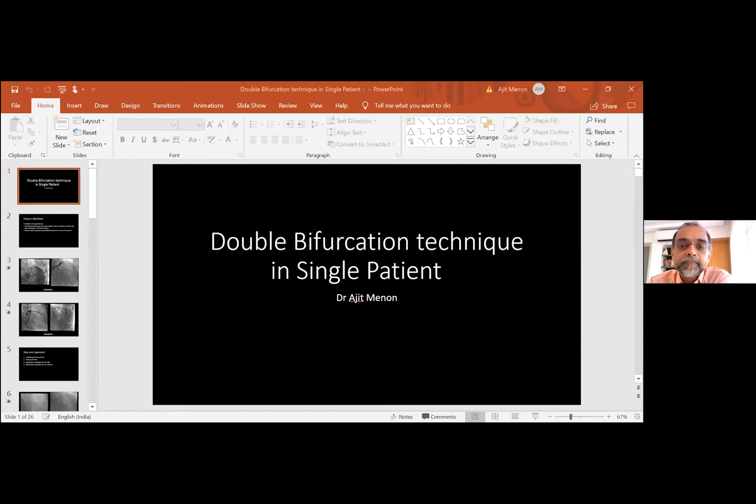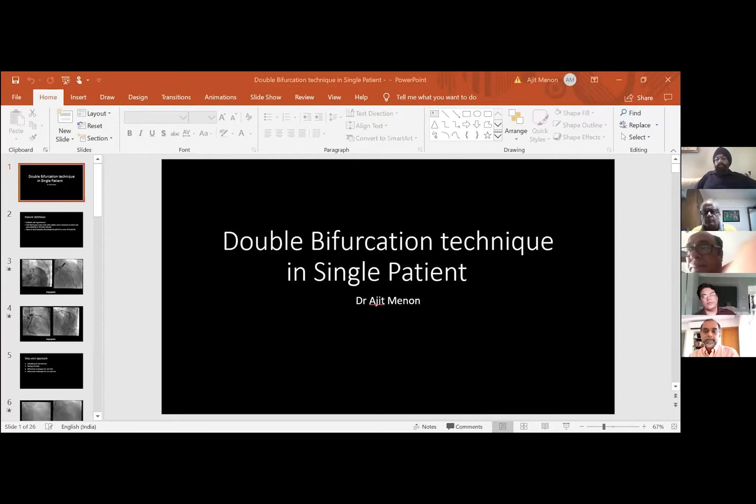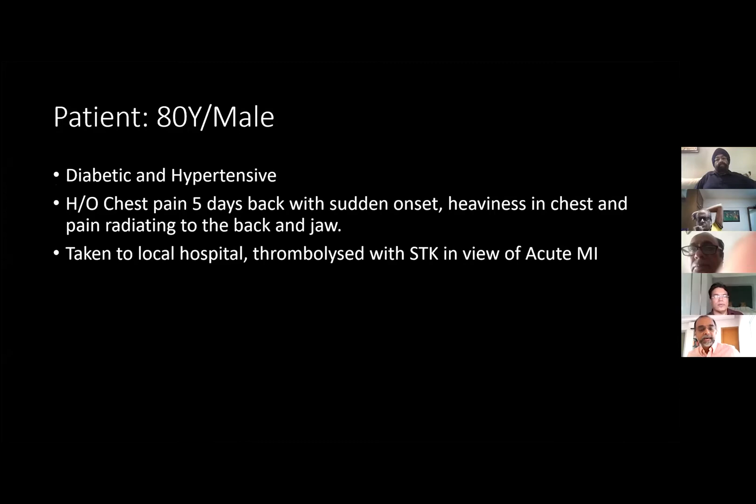This was an elderly gentleman, not from Bombay — he was from out of town. He had diabetes and hypertension, was about 85 years old, presented with chest pain of sudden onset, was admitted in Ranchi, and was diagnosed to have an inferior OLMI. He was thrombolized with streptokinase over there.